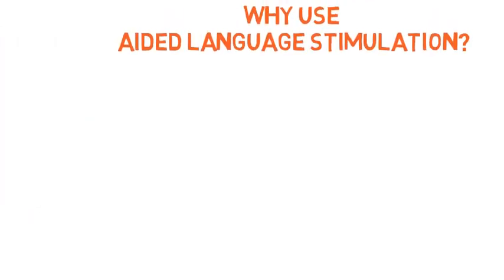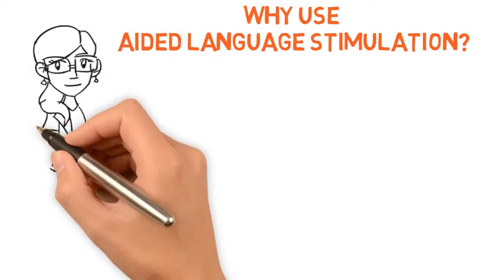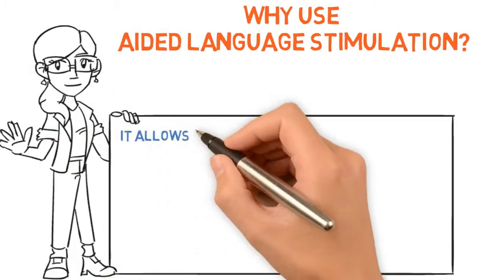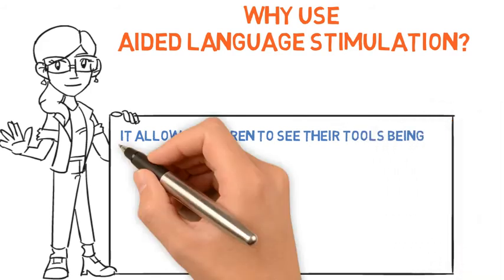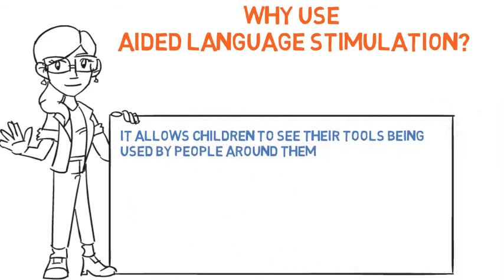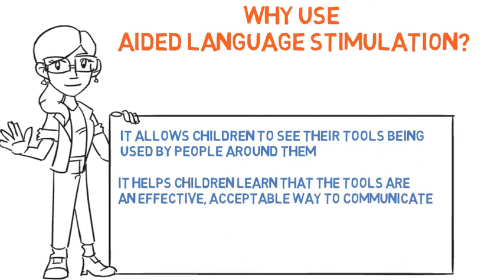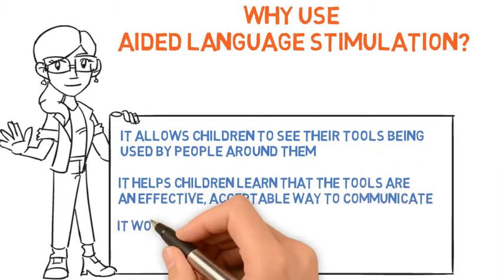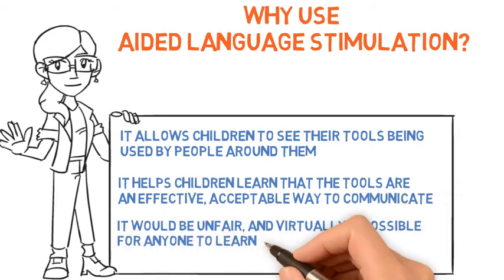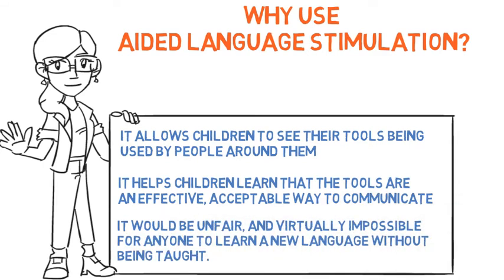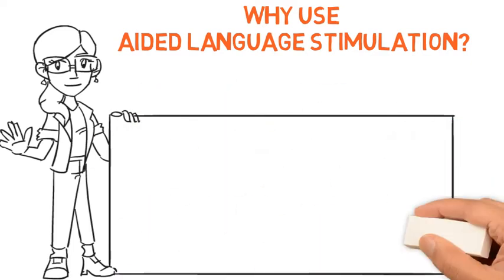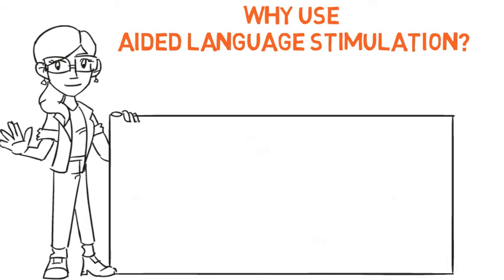Aided Language Stimulation is the perfect way for children to learn to use their AAC systems. It allows children to see their tools being used by people around them, and it helps them to learn that the tools are an effective, acceptable way to communicate. It would be unfair and virtually impossible for anyone to learn a new language without being taught first. Therefore, it is unfair to expect children to automatically use their tool without others modeling and teaching it first.